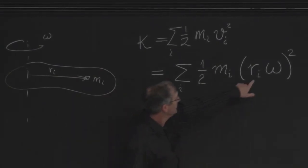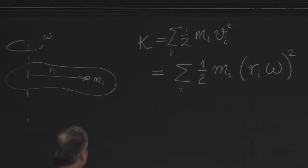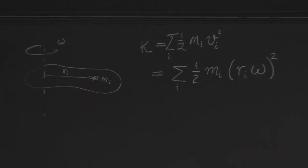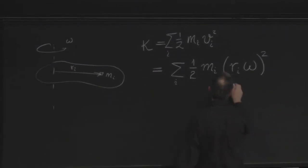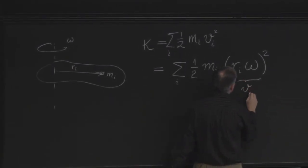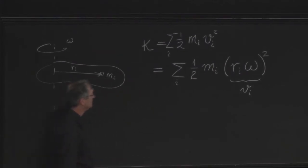So r sub i is the distance from the axis of rotation to that little bit of mass. And this little bit of mass is rotating around the fixed axis in a circle of radius r. And it has angular velocity omega. So therefore, it is moving at speed r sub i times omega. Are we together?